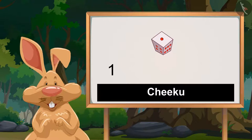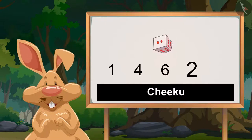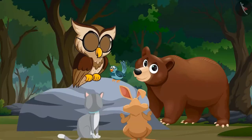I will roll first. One, four, six, two, two. So Chiku got these numbers on the dice.